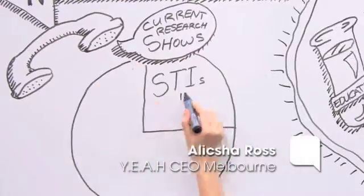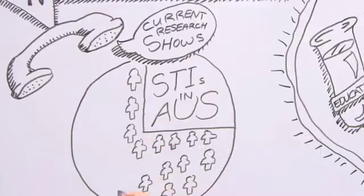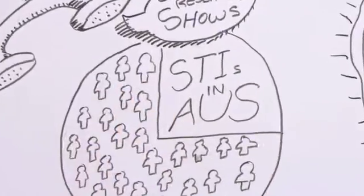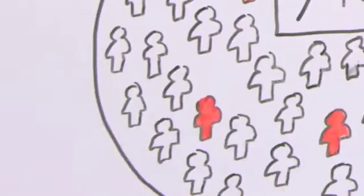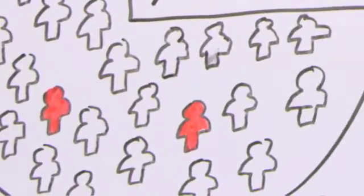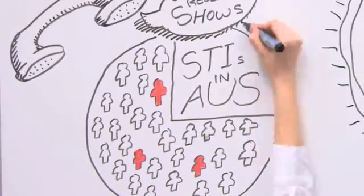Three quarters of all STIs in Australia occur amongst young Australians. One in 20 young Australians has an STI. It's the same unsafe behavior that can lead to the transmission of HIV.